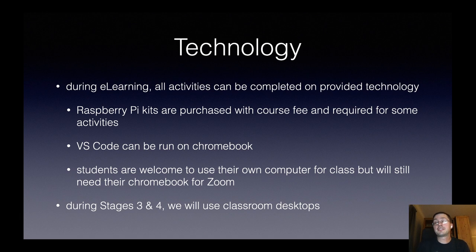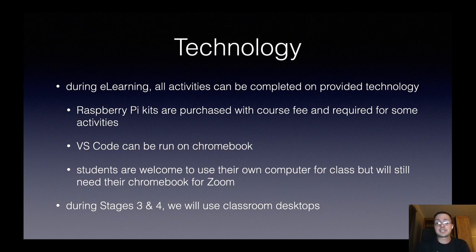On everyone's mind is the technology and how we're going to make this work during e-learning. The good news is students will be able to complete all the activities on the provided technology. By now all students have received their Raspberry Pi kits. Those are purchased with the course fee and are really an entire computer that students can use throughout the course. I'll also be walking students through how they can install and use VS Code on their Chromebook. If students have their own computer they're welcome to use that. They will still need their Chromebook for Zoom and some other activities. When we are back in the classroom we'll be able to use the classroom desktops for some projects as well.